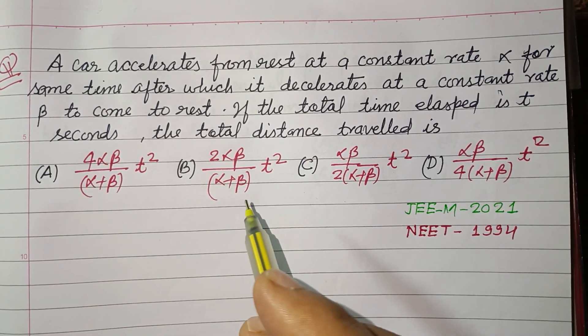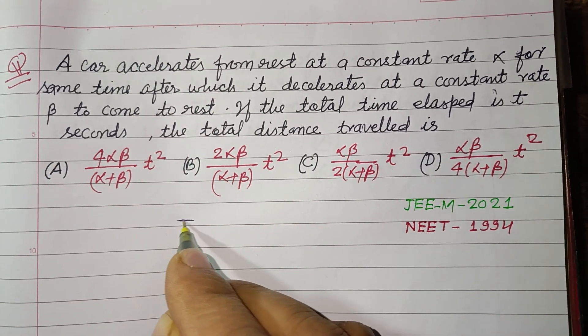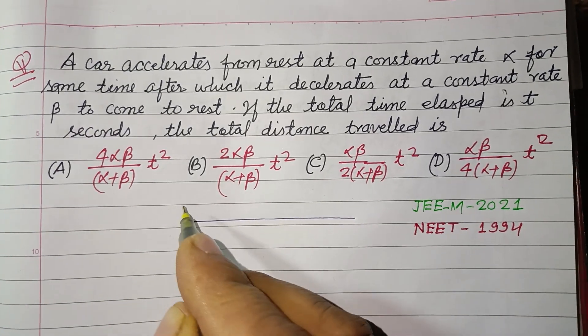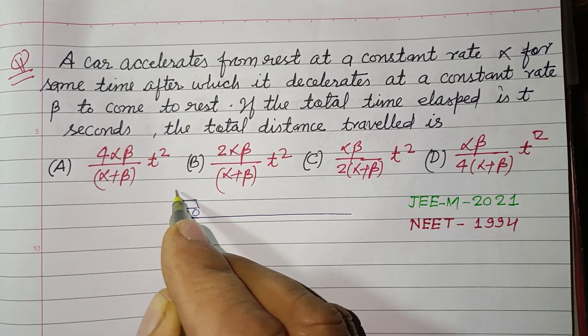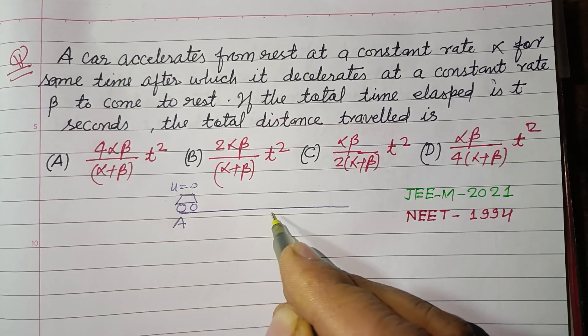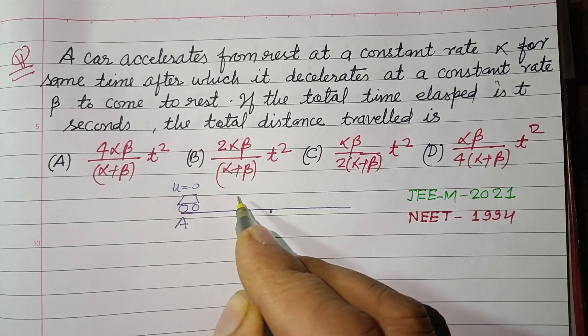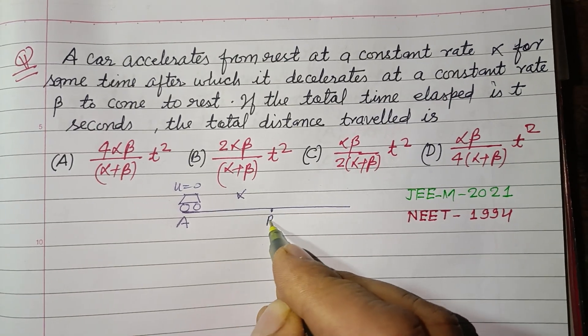So students, first we make a figure. A car starts from rest, u = 0, from point A. After taking a constant acceleration α, it reaches point B.